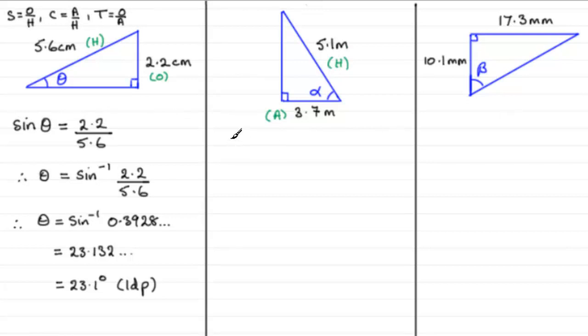So if we're working that one out, it's going to be the cosine, or cos for short, of the angle alpha. That's going to equal the adjacent side divided by the hypotenuse. So 3.7 divided by the hypotenuse, 5.1.